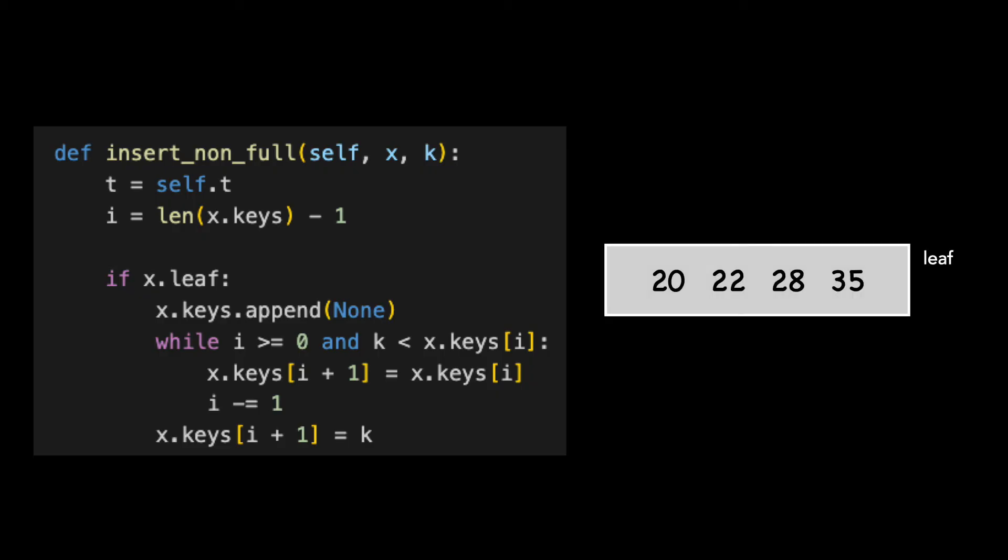We have the node on the right, which is a leaf. We want to insert the key of 26 into this node. We set i equal to the length of the keys minus one, which is three. We append a null key to the end of the array, which I'll mark by x.